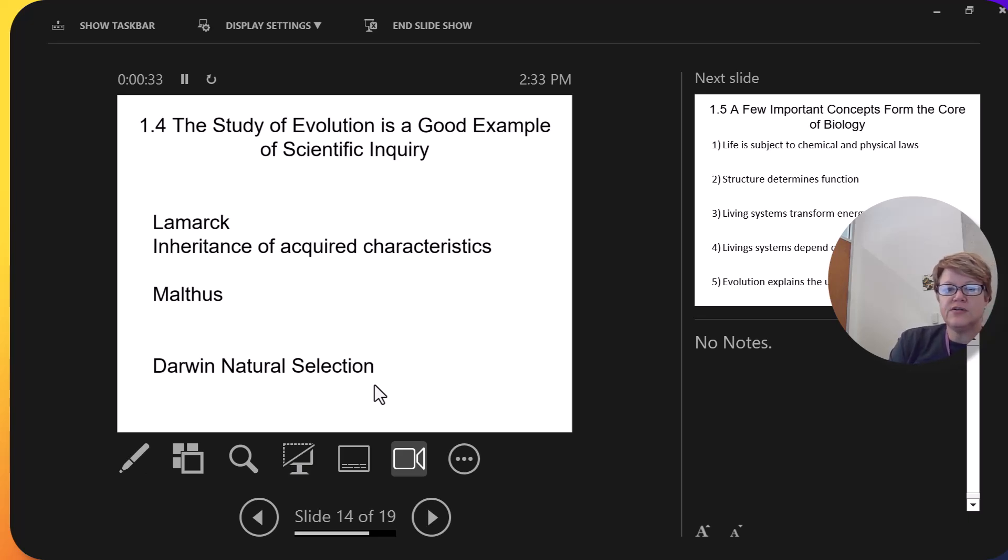what natural selection says is that organisms, when a population exceeds the resources of an area, there's too many individuals, there's not enough resources, food, water, there will be, naturally, some organisms in that group who have, just by chance, were born with a better chance of being able to get the food or being able to hide from the predator than others.